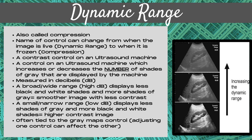This ultrasound control increases or decreases the number of shades of gray that are displayed by the machine, and this is measured in decibels. A broad or wide range — a high dynamic range level — displays less black and white shades on the ultrasound image and more shades of gray. This gives you a smoother image overall with less contrast. A small or narrow range — a low dynamic range number — displays less shades of gray and more black and white shades. This gives you a higher contrast image.